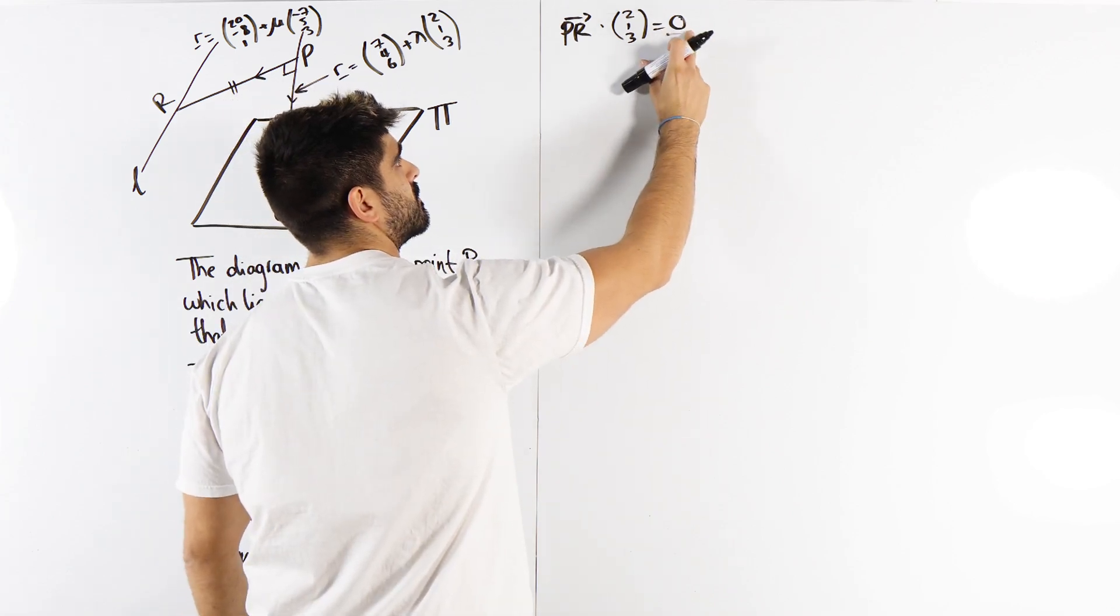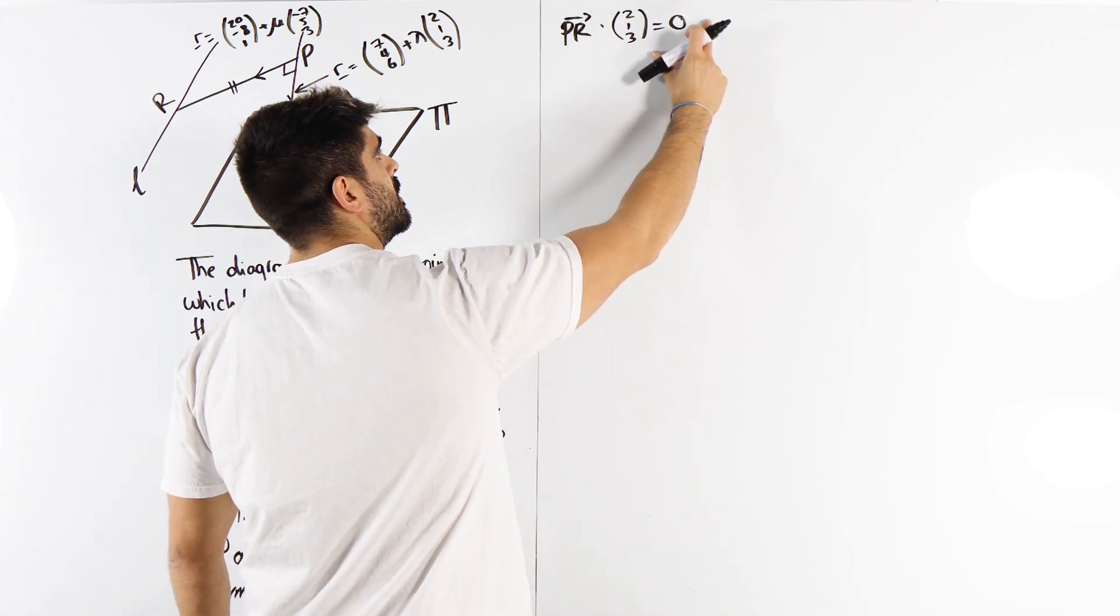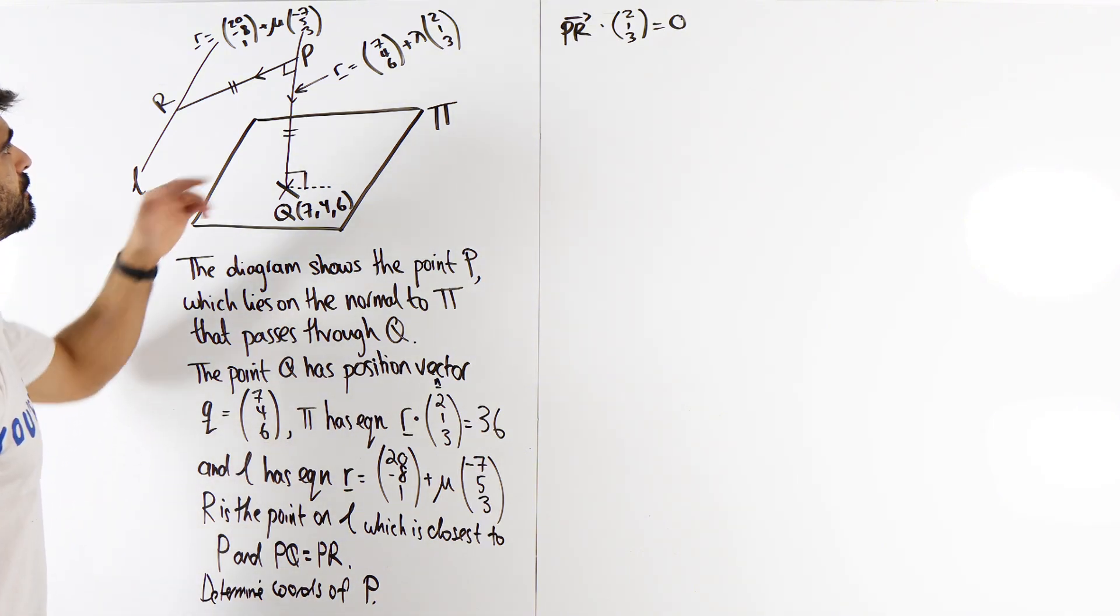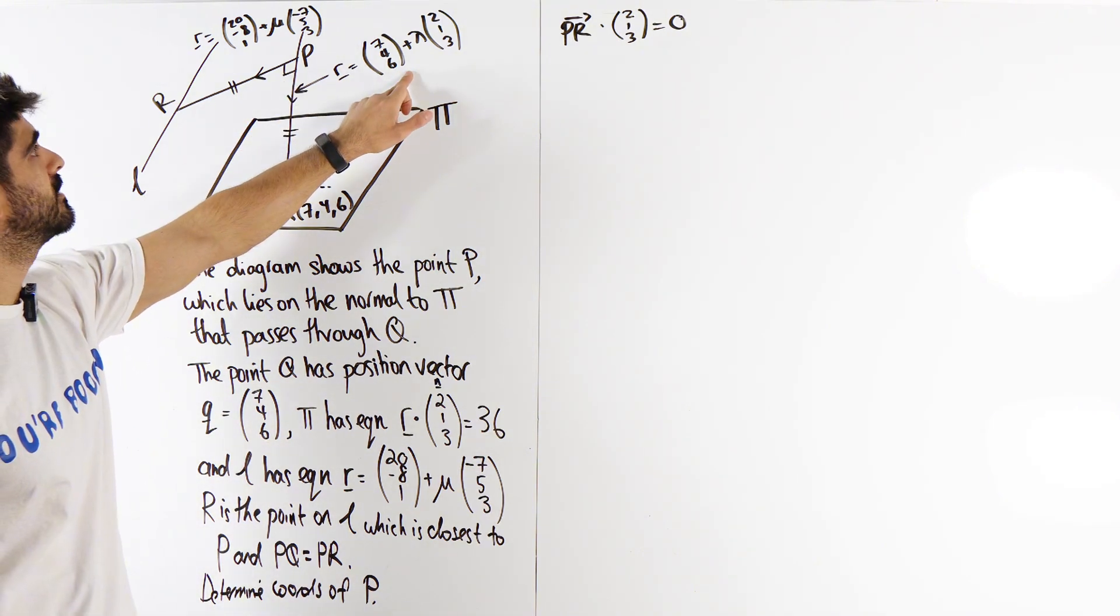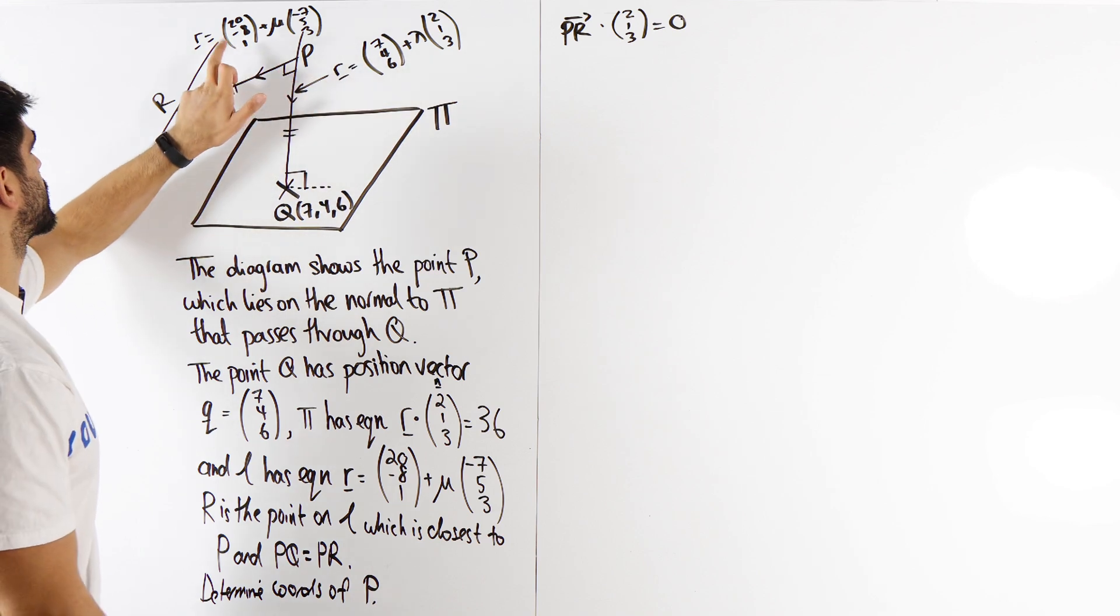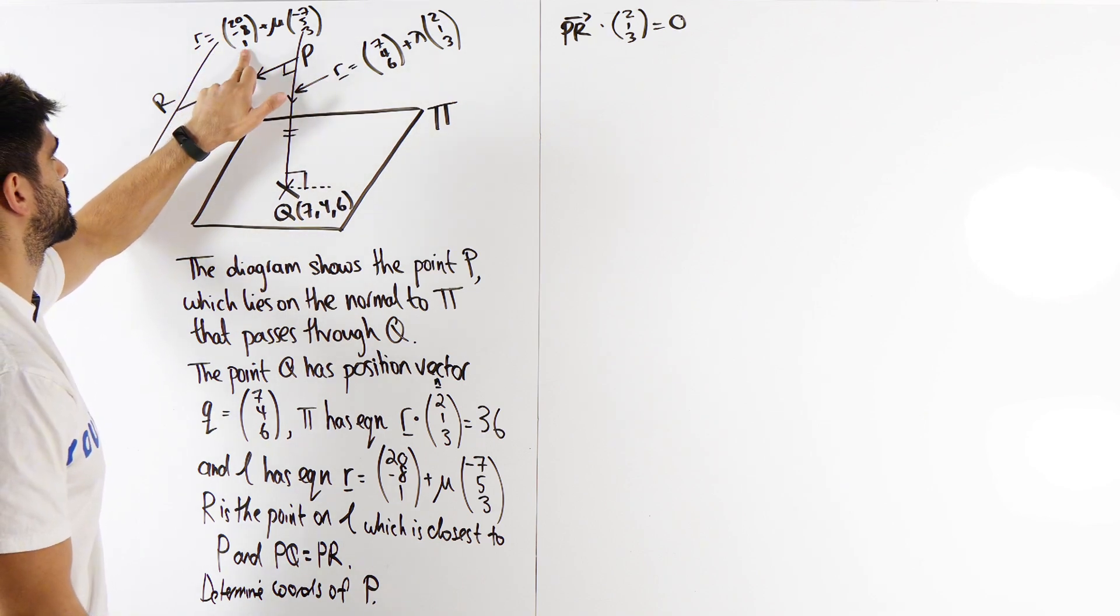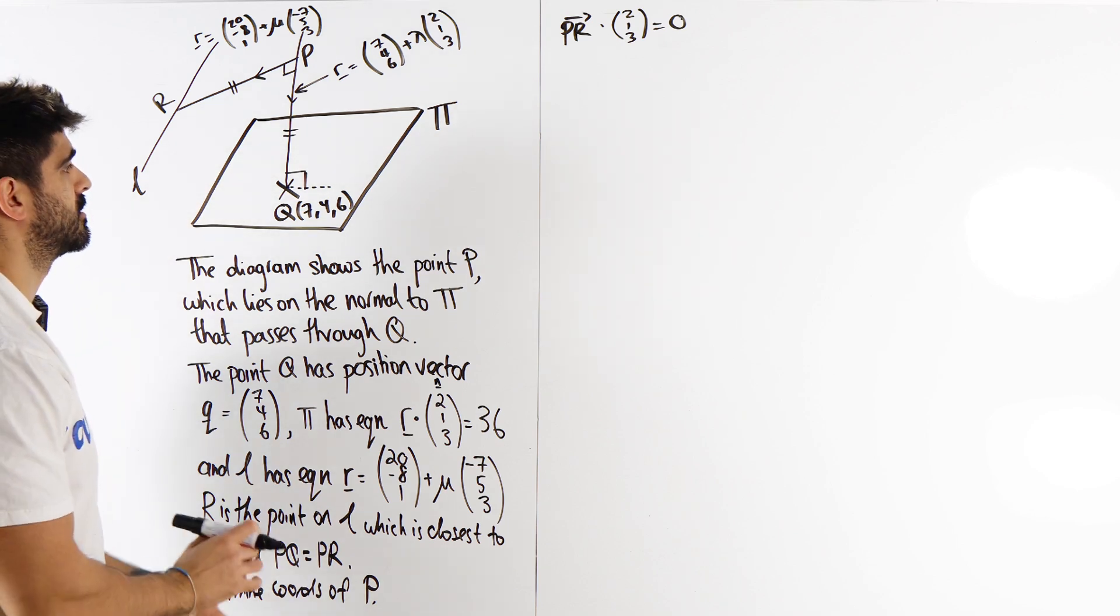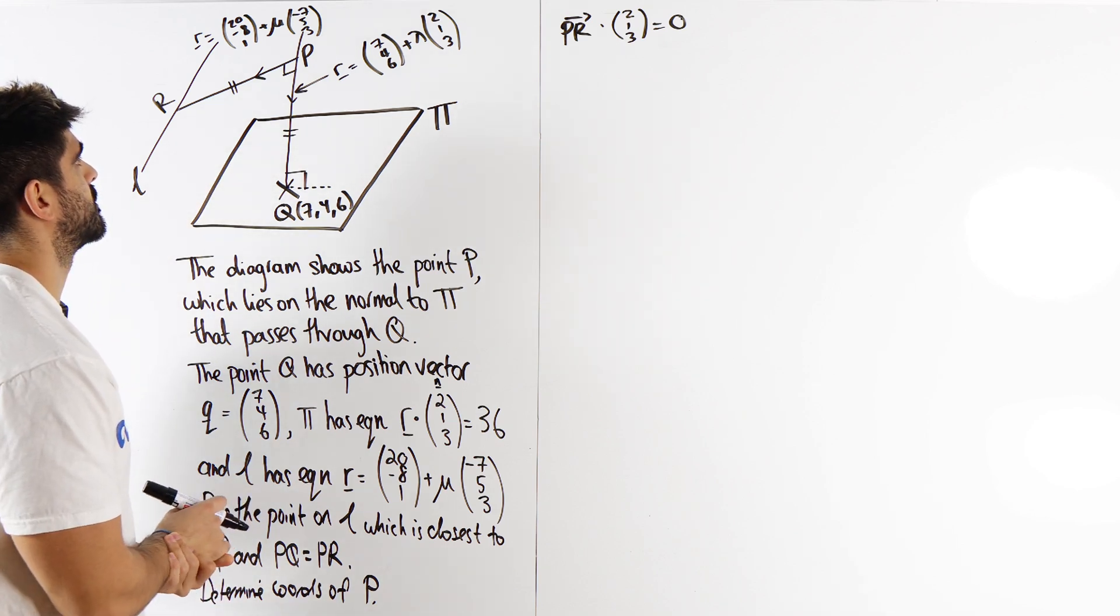Okay, so PR. Now P has a general point, and so does this. This is going to be in terms of lambda and mu.